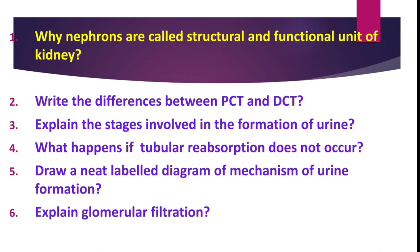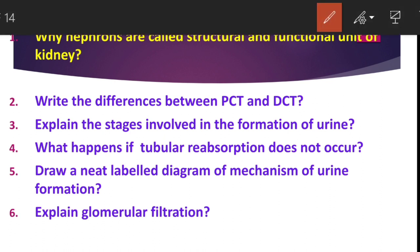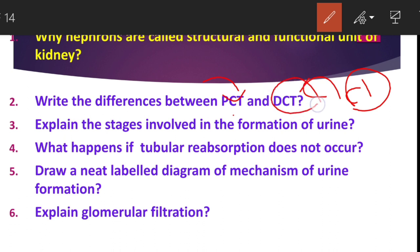Write the difference between PCT and DCT. PCT stands for proximal convoluted tubule and DCT for distal convoluted tubule. PCT is responsible for the reabsorption of substances like water and glucose. DCT is responsible for the reabsorption of ions like sodium, potassium, and chloride. Tubular reabsorption takes place in PCT while tubular secretion occurs in DCT. PCT helps regulate the concentration of water and organic solutes, while DCT maintains the proper pH concentration of urine.